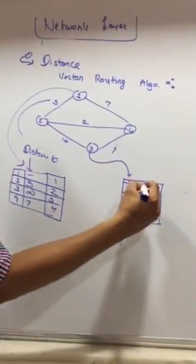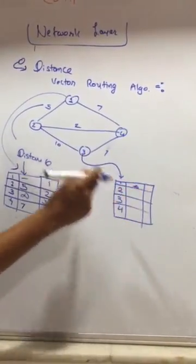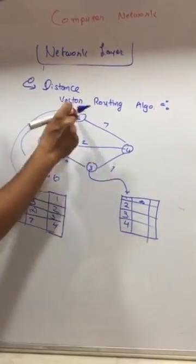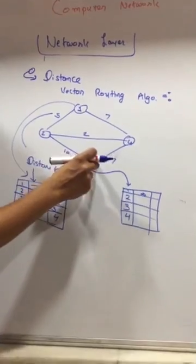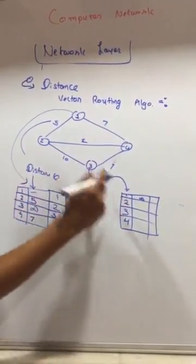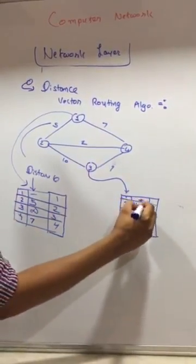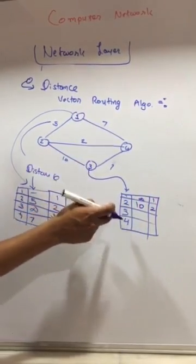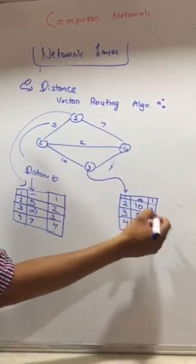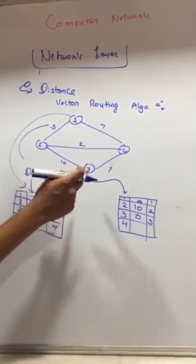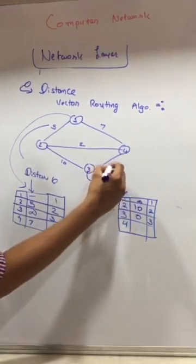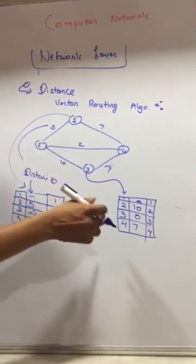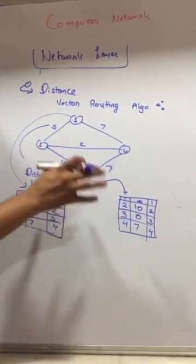The routing table at node 3 is created in the same manner. Distance from 3 to 1 is infinite — there is no direct link between 3 and 1, though there is an indirect link. Node 3 only knows about its neighboring nodes. Distance from 3 to 2 is 10, with intermediate node 2 as next hop. Distance from 3 to 3 is 0. Distance from 3 to 4 is 7, with next hop being node 4. Similarly, the routing table at every node is created likewise.